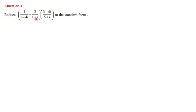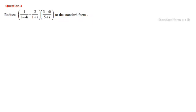Next, we shall discuss question number 3: Reduce [1/(1-4i) - 2/(1+i)] × (3-4i)/(5+i) to standard form. We have to write this given expression in standard form a + ib. The calculation is a little lengthy but can be done easily. We divide it into two parts: first, making a single denominator; then, rationalizing it.